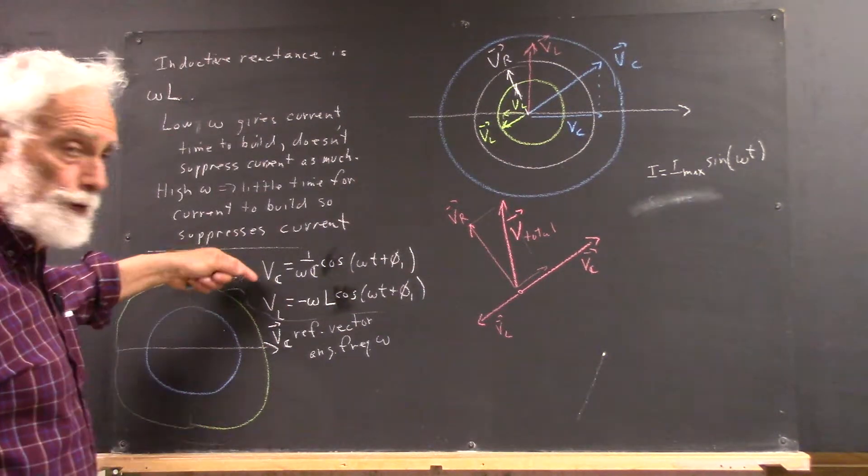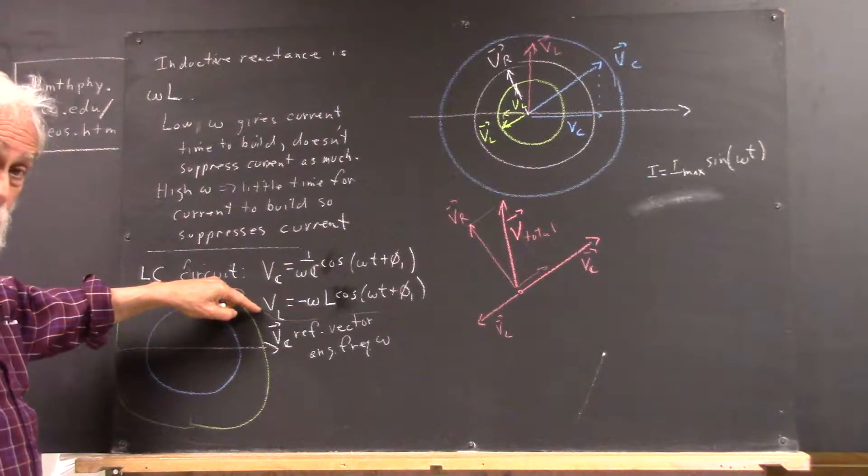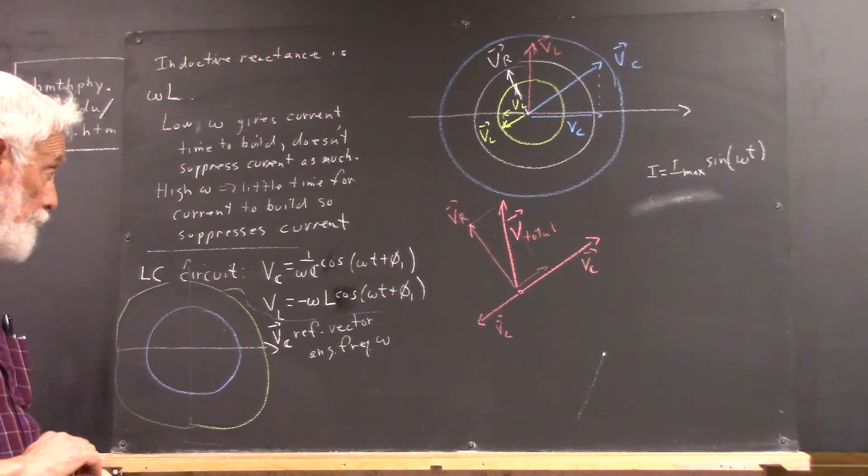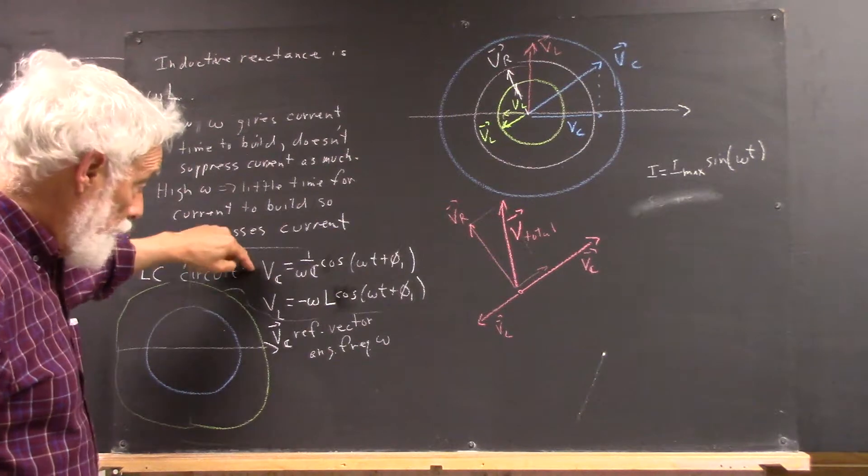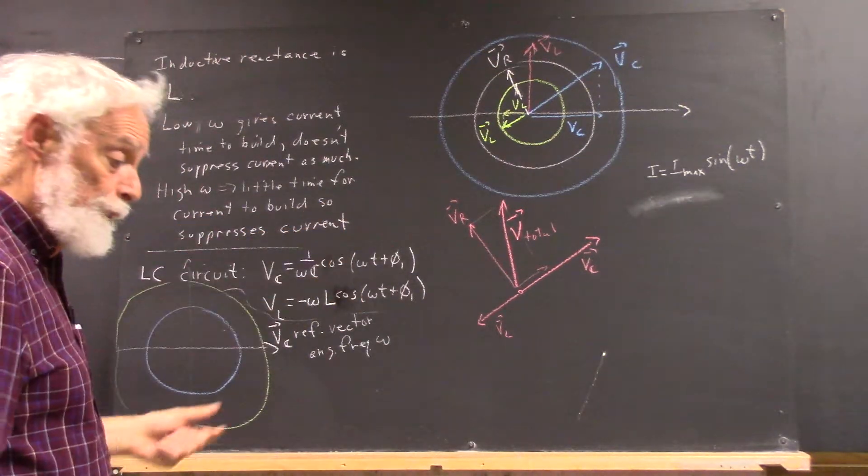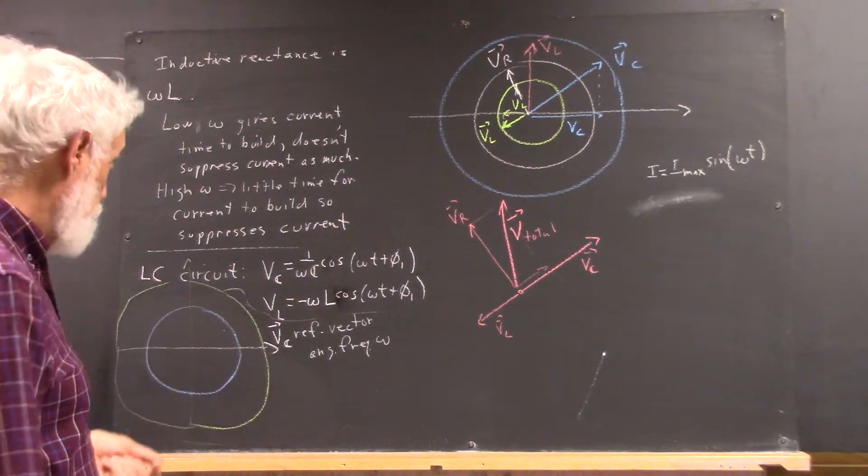Okay, in an LC circuit we just have the inductor voltage and the capacitor voltage, and we can model the voltage as a cosine function of time. We know that we can model the cosine function of time on a reference circle.